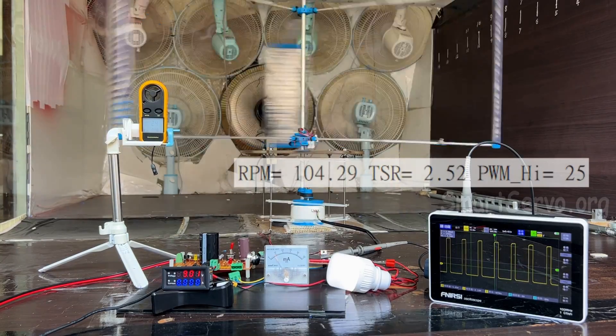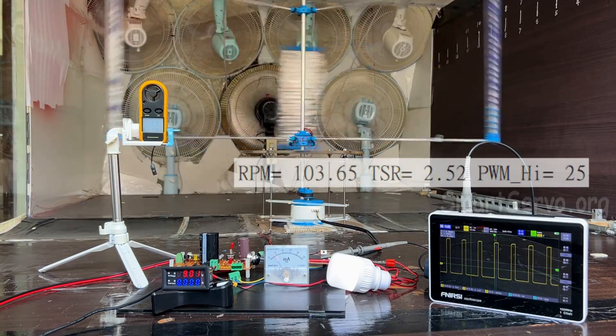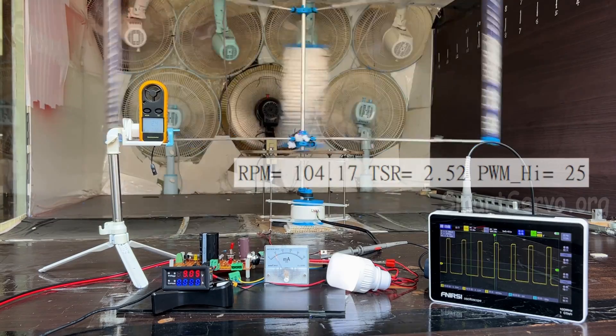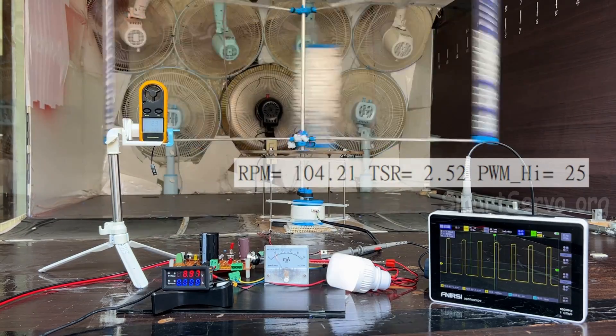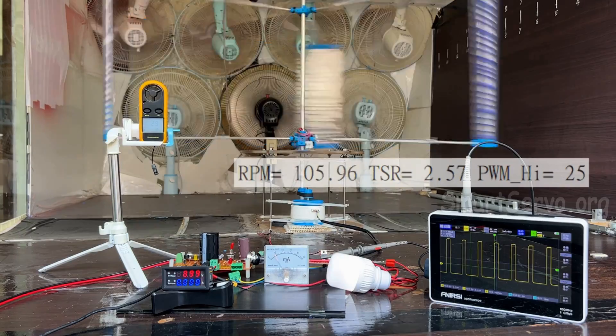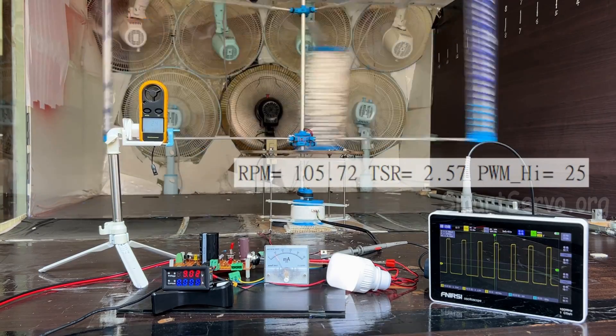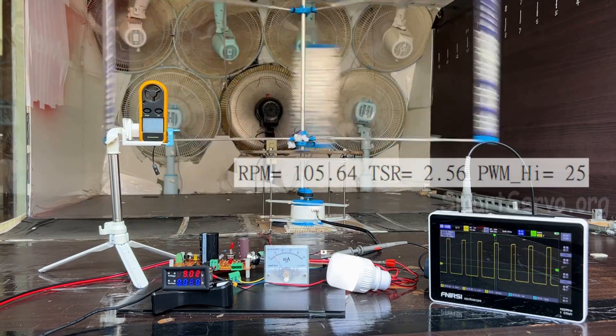Therefore, by adjusting the load through PWM, continuous power generation can be achieved even in weak wind conditions. And it can also be used to maintain the wind turbine at the optimal speed to achieve maximum efficiency.